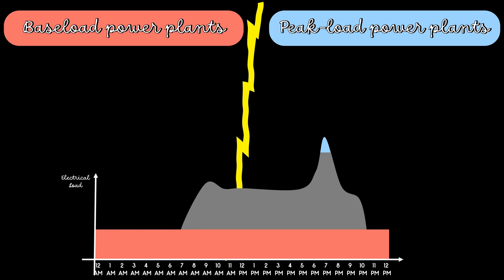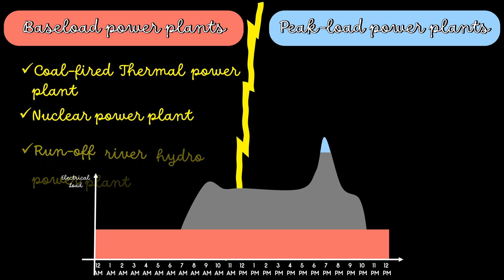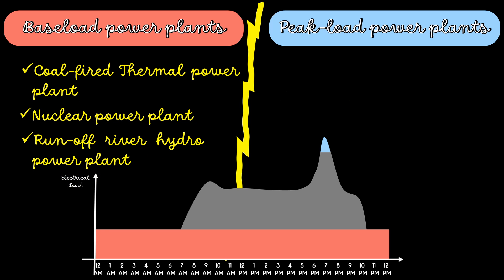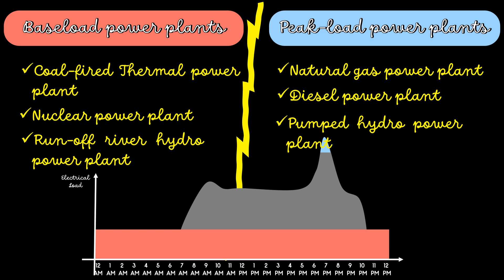Some examples of base load power plants are coal-fired thermal power plants, nuclear power plants, and run-of-river hydro power plants. Natural gas, diesel power plants, and pumped hydro power plants are the best examples of peak load power plants. If you are interested in learning about pumped hydro, there is a wonderful video about this — check it out.